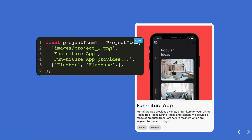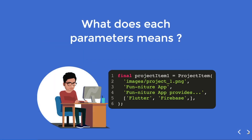Your first parameter is image, the second is title, the third is description, and the fourth is a list of technologies. Nothing can go wrong, right? So you pass this code to your senior developer and he smiles and asks: what does each parameter mean? He says this is not really readable.